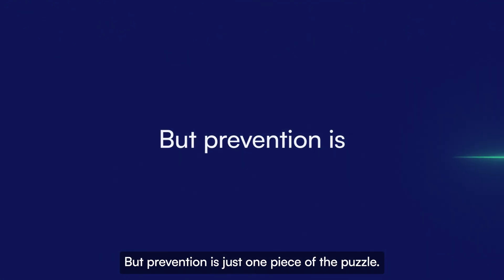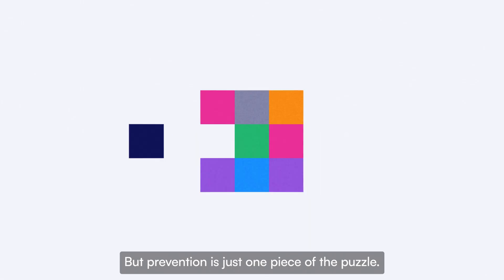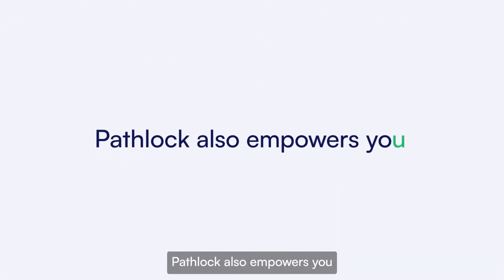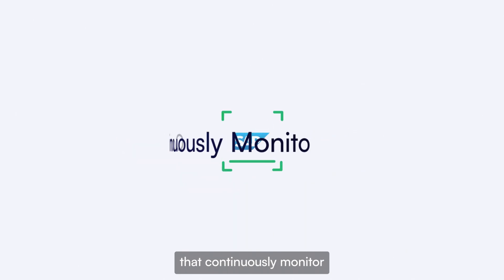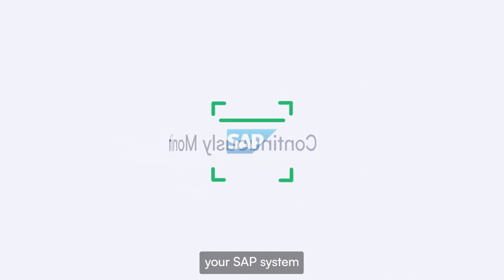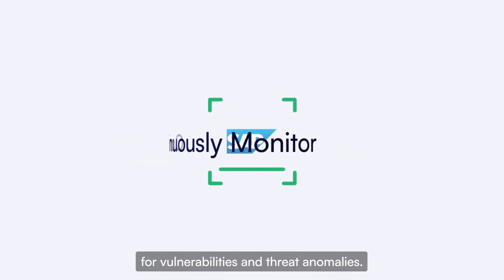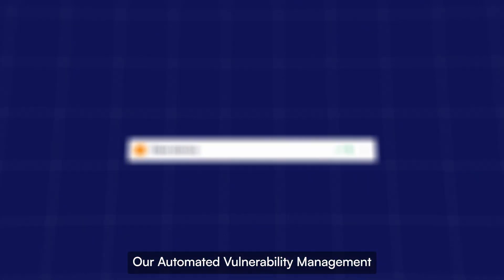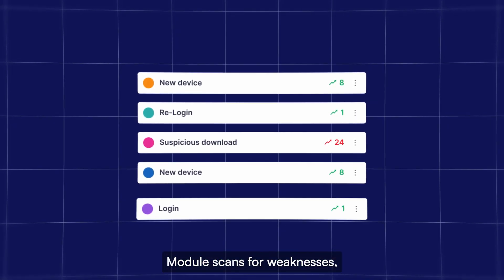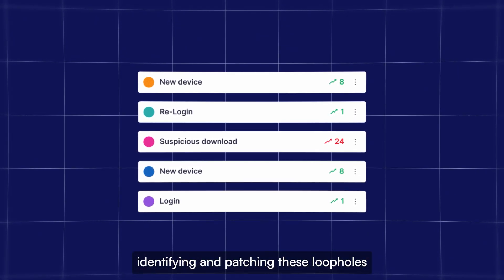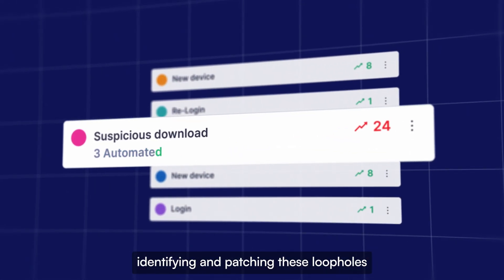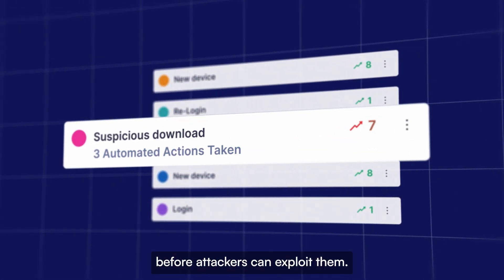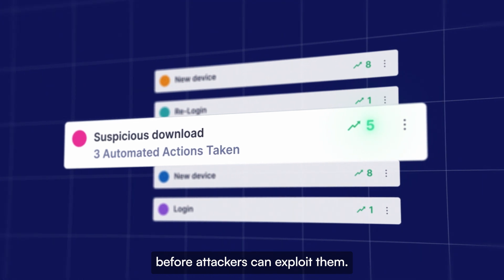But prevention is just one piece of the puzzle. Pathlock also empowers you with detective controls that continuously monitor your SAP system for vulnerabilities and threat anomalies. Our automated vulnerability management module scans for weaknesses, identifying and patching these loopholes before attackers can exploit them.